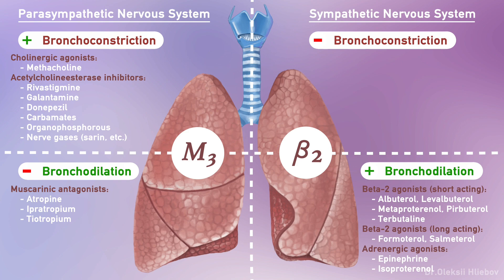Selective beta-2 agonists are the most important bronchodilators currently approved for bronchial asthma and obstructive lung disease treatment. Depending on their duration of action, they are used as either rescue medications — short-acting beta-2 agonists — or control medications — long-acting beta-2 agonists. Commonly used inhaled short-acting beta-2 agonists include albuterol, levalbuterol, metaproterenol, pirbuterol, and terbutaline. Long-acting beta-2 agonists include formoterol and salmeterol.